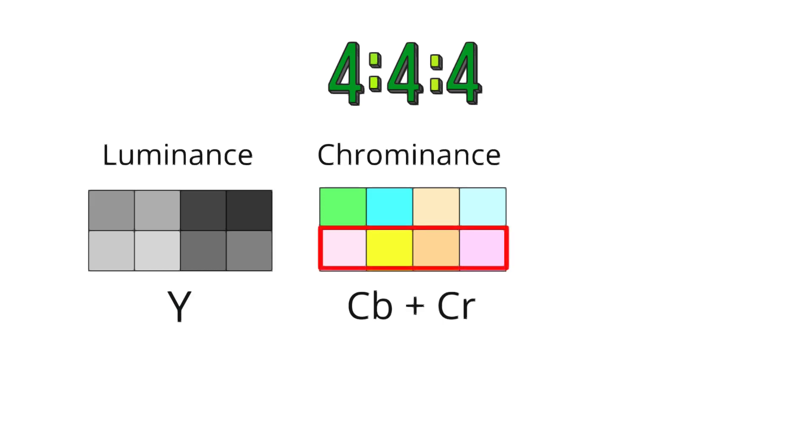This 4 also means that the chrominance for this second color channel is sampled at the same rate as the luminance, meaning that here also for every 4 pixels of luminance, we have 4 pixels of chrominance information for this second color channel.